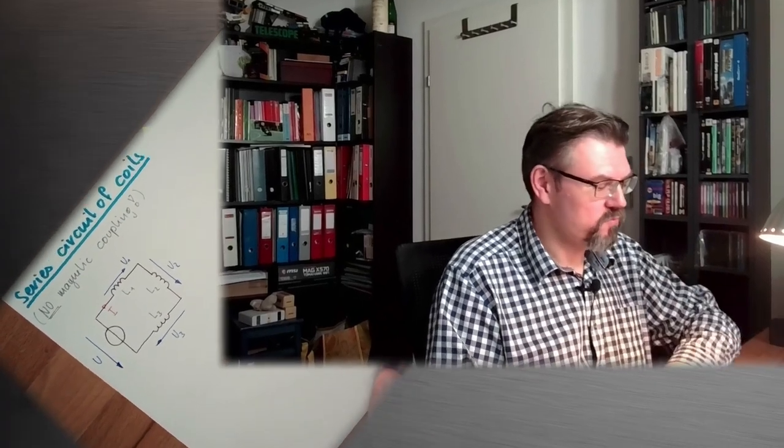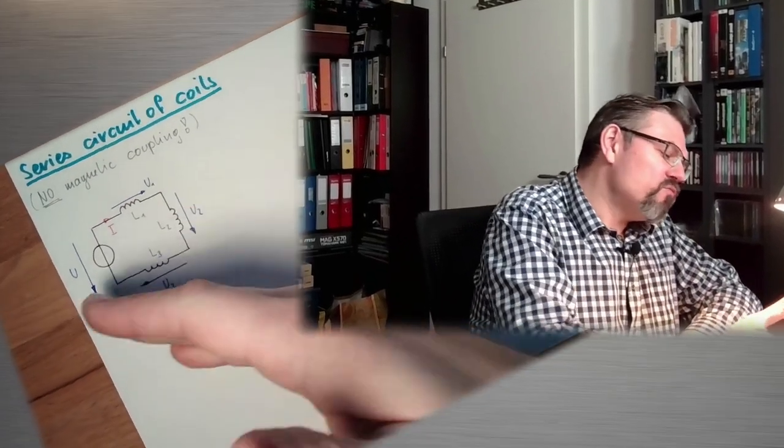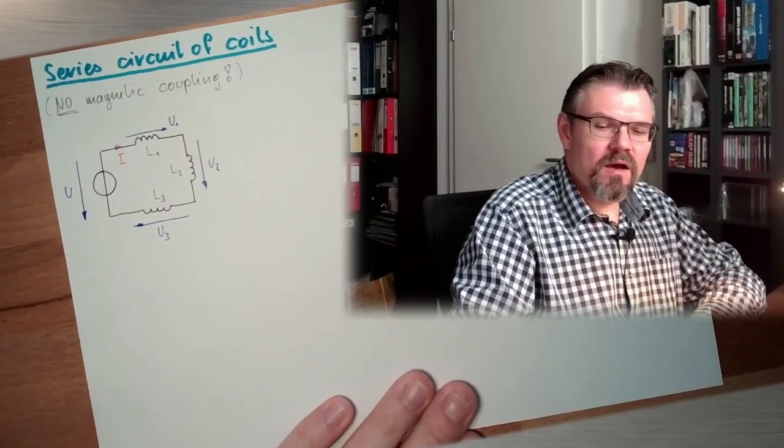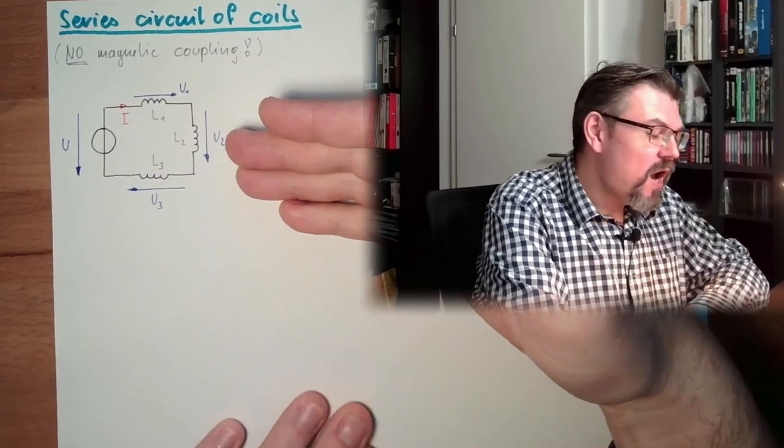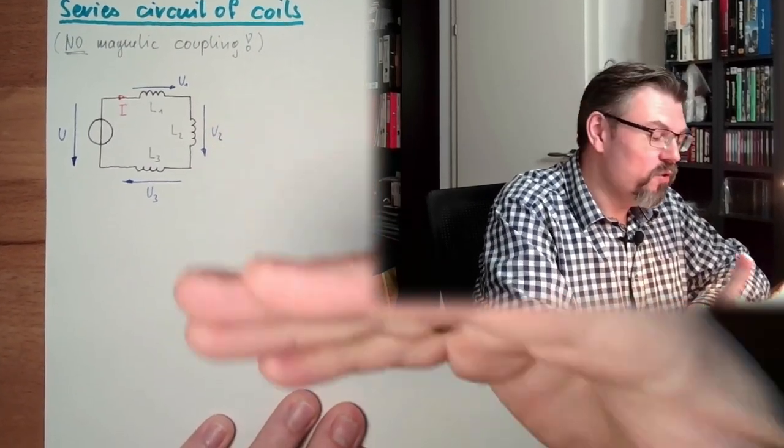So every coil is on its own with its own self-induction, but the magnetic field of one coil does not touch the other coil, so they are magnetically not coupled. Alright, so I have drawn a situation here. This should be our situation, how we want to have a look at it.